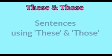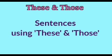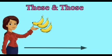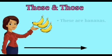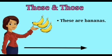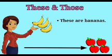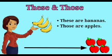Okay children, let's try to make sentences using these and those. The bananas are near to me, so I'll use these. These are bananas. And the apples are far from me, so I'll use those. Those are apples.